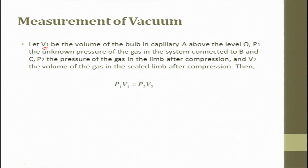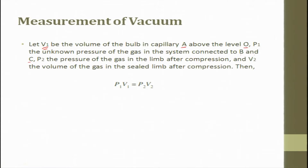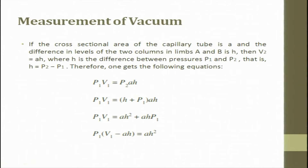If V is the volume of the bulb in capillary A above level O, P1 is the unknown pressure of the gas in the system connected to B and C, P2 is the pressure of the gas in the limb after compression, and V2 is the volume of the gas in the sealed limb after compression, then P1V1 = P2V2. If the cross-sectional area of the capillary tube is A and the difference in the level of the two columns in limbs A and B is H, then V2 = A × H.